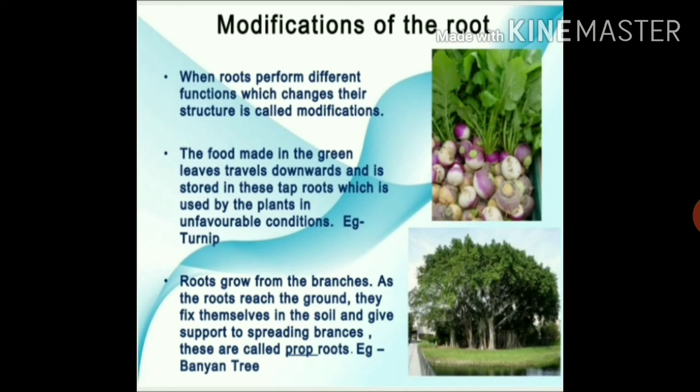Some modified roots store food. Plants such as radish, carrot, sweet potato, and beetroot have swollen roots. Swollen means puffy — the roots are enlarged. These roots store food produced by the plant and are also used as food by humans.